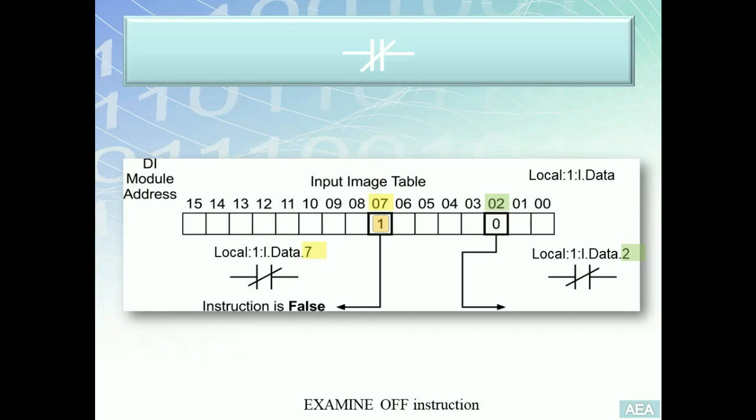That's how we know this XIO will examine terminal number two—is it open? Is it reading a logic zero? The answer, as you can see, is yes. That's why this instruction, wherever it exists in the program, will be currently true and will show the green bars on both sides of the instruction.